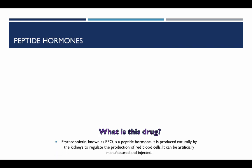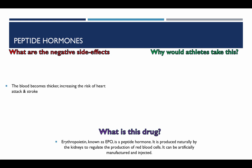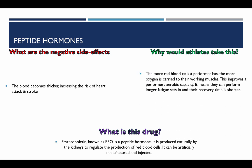Peptide hormones. What is this drug? Erythropoietin, known as EPO, is a peptide hormone. It is produced naturally by the kidneys to regulate the production of red blood cells, and it can be artificially manufactured and injected. What are the negative side effects? The blood becomes thicker, increasing the risk of heart attack and stroke. Why would an athlete take these? The more red blood cells a performer has, the more oxygen is carried to their working muscles, improving aerobic capacity, allowing them to perform longer before fatigue sets in, and shortening recovery time.